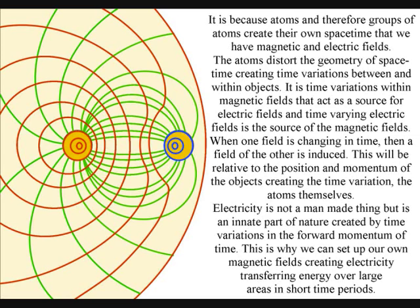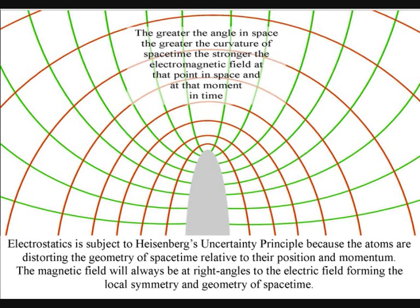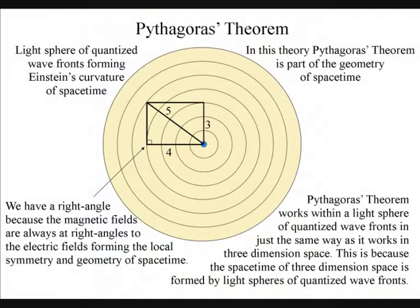It is time variations within magnetic fields that act as a source for electric fields, and time varying electric fields induce magnetic fields. When one field is changing in time, then a field of the other is induced. This will be relative to the position and momentum of the object creating the time variation, the atoms themselves.